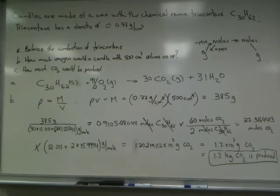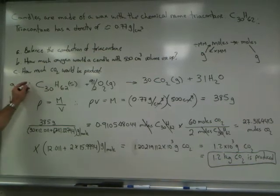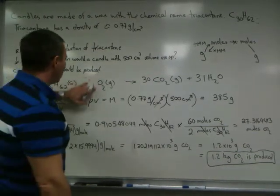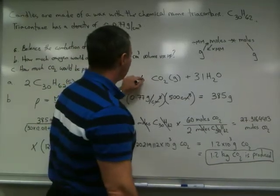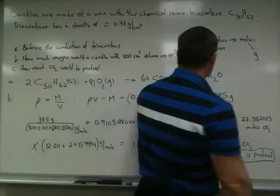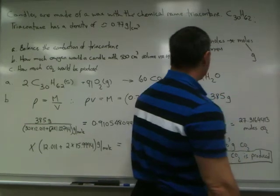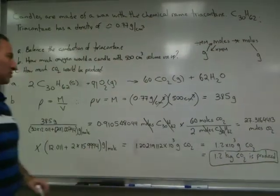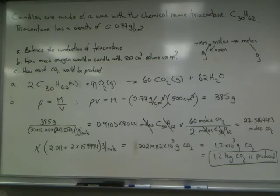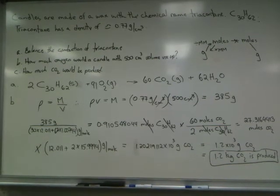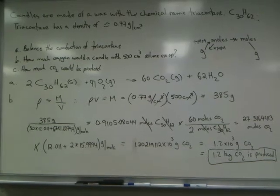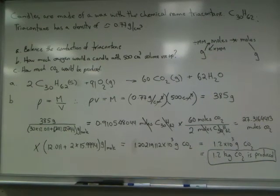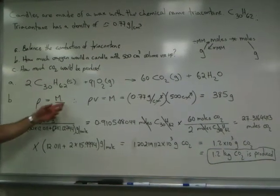And that will take care of how many oxygens are on both sides of the equation. If you're bothered by fractions, you can double everything, and this becomes 2, this becomes 91, this becomes 60, and this becomes 62. Now the equation is still balanced and it's balanced all with whole numbers. The next step of solving our problem is how much oxygen would a candle with 500 centimeters cubed volume use up? Well, we know from our grade 10 curriculum that density is equal to mass over volume.